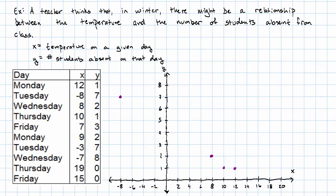Temperature 7, that's halfway between 6 and 8, and there were 3 absences. Temperature 9, that's halfway between 8 and 10, and there were 2 absences. Temperature negative 3, and there were 7 absences. Negative 7, and there were 8 absences. 19, and there were 0 absences. 15, and there were 0 absences.